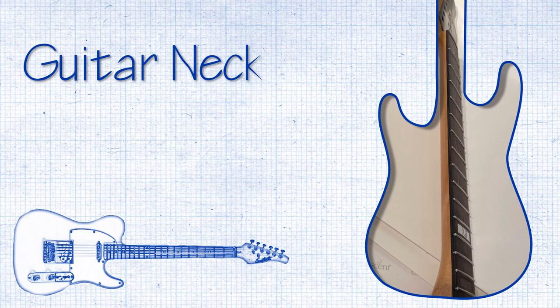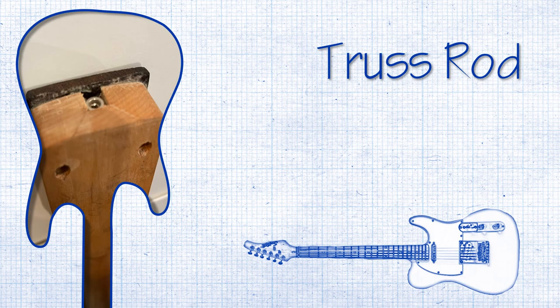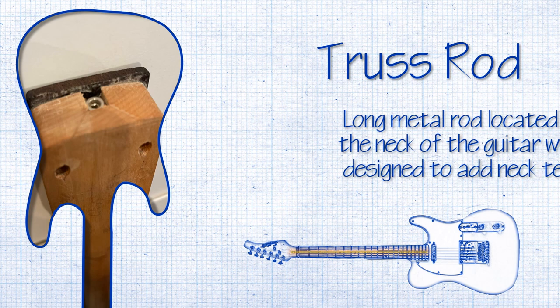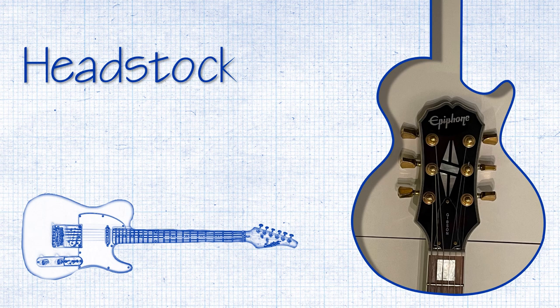The guitar neck extends from the guitar headstock to the guitar body. It also contains the fretboard and the truss rod. The truss rod is a long metal rod located inside the neck of the guitar, which is designed to add reverse tension to the neck to counteract string tension and keep the neck straight.